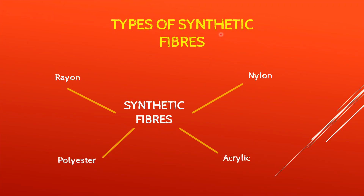Synthetic fibers are made of very large units called polymers, and polymers are made up of many smaller units called monomers. There are many types of synthetic fibers, but you have to study four types: Rayon (R-A-Y-O-N), Nylon (N-Y-L-O-N), Acrylic (A-C-R-Y-L-I-C), and Polyester (P-O-L-Y-E-S-T-E-R). These four are the synthetic fibers you need to study.